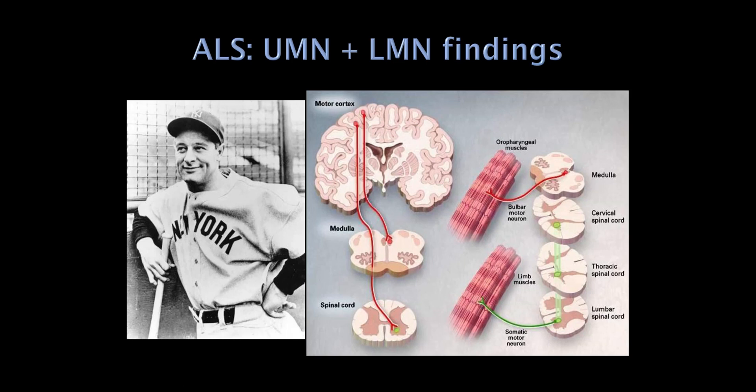ALS is quite different from polio and West Nile. The anterior horn cells are certainly involved, and the medulla lower motor neurons are certainly involved, but ALS is different in that the cortical neurons are also involved. This is a true motor neuron disease - it affects all the motor neurons: the upper motor neurons, including the corticospinal tract and corticobulbar tract, and the lower motor neurons, the anterior horn cells.